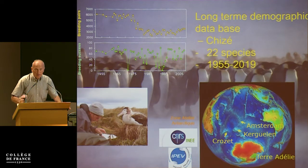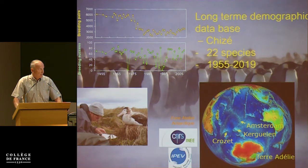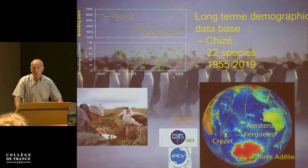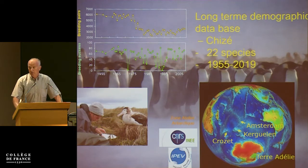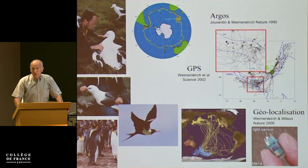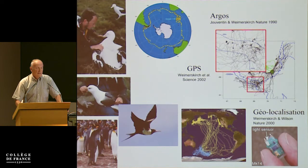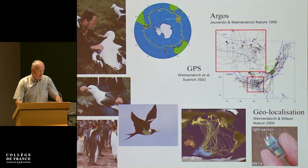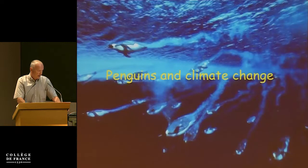In our lab in Chizé, we have long-term monitoring of many seabird species in the Southern Ocean — from the Crozet, Kerguelen, Amsterdam, and Terre Adélie bases — where we have been monitoring species for more than 60 years. We have, for many species, data on changes in population size, survival rates, breeding success, and recruitment. We also use small loggers placed on the birds to track where they are foraging and what they are doing, and I will give you some examples of what we can do with these loggers.